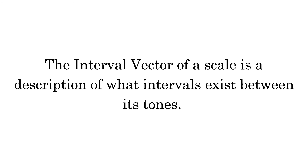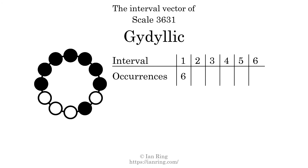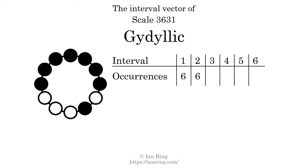The interval vector of a scale is a description of what intervals exist between its tones. There are 6 intervals with the size of 1 semitone, 6 intervals with the size of 2 semitones, and 5 intervals with the size of 3 semitones.